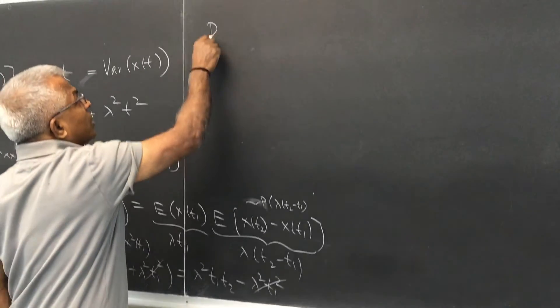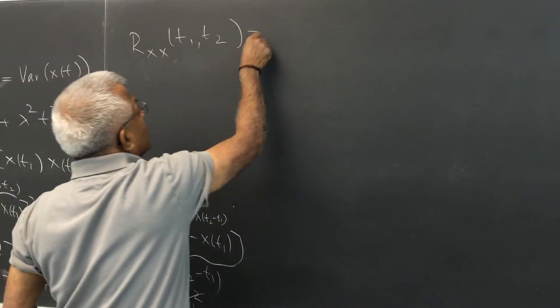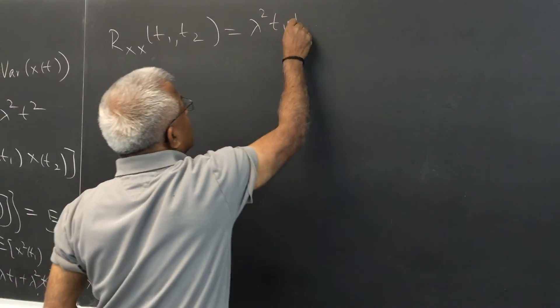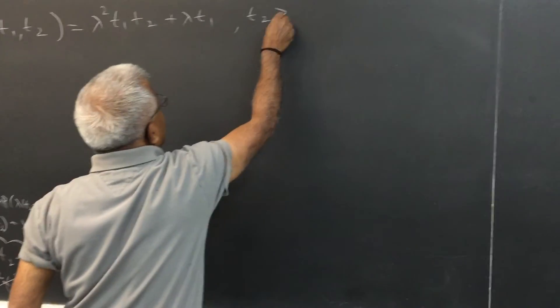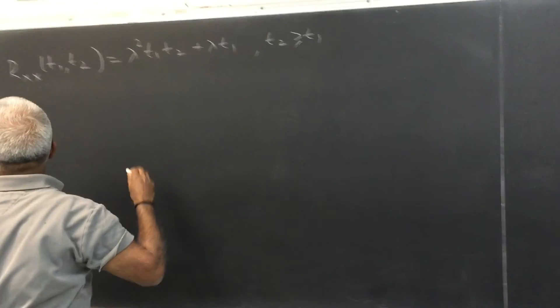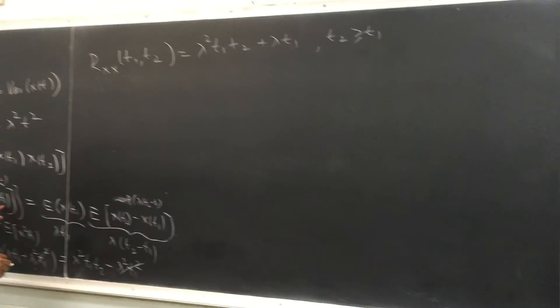So this cancels on both sides, giving us Rxx t1, t2 is lambda squared t1 t2 plus lambda t1. This is the case when t2 is greater than t1. That's the way we have taken. You can see t2 is greater than t1.